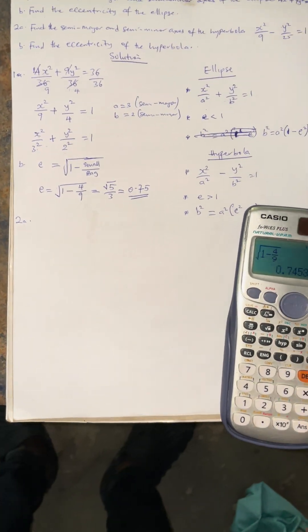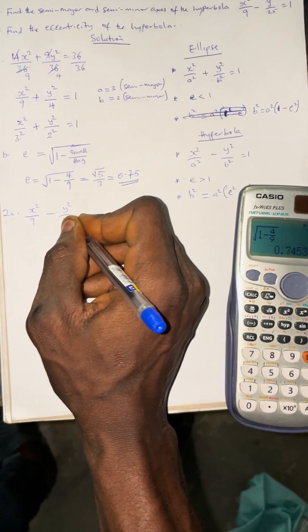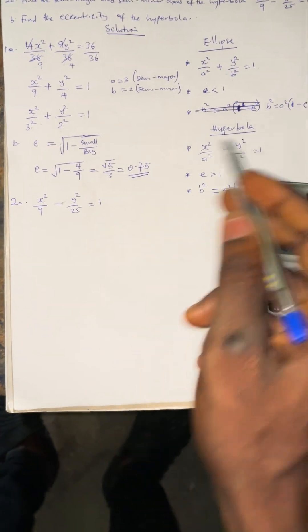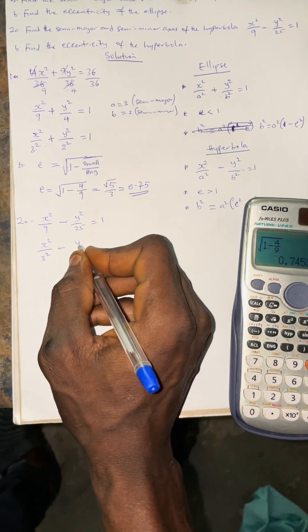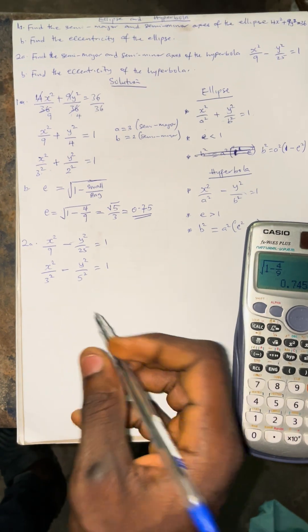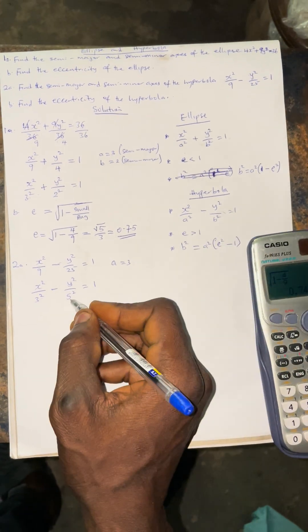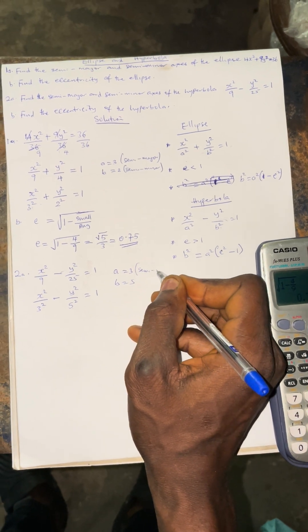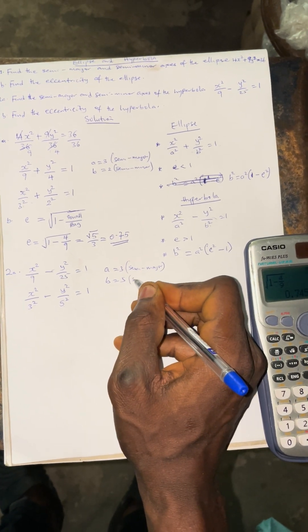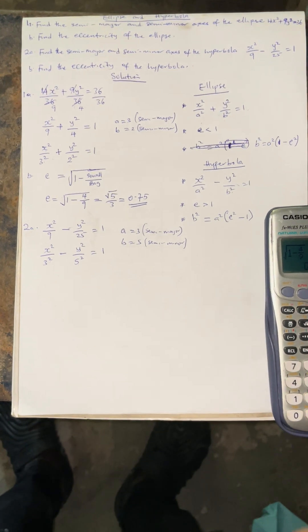The second question is under hyperbola. The equation given is x² over 9 minus y² over 25 equals 1. Rewriting: x² over 3² minus y² over 5² equals 1. Comparing with the standard hyperbola equation, a equals 3 and b equals 5. Therefore, the semi-major axis is 3 and the semi-minor axis is 5.